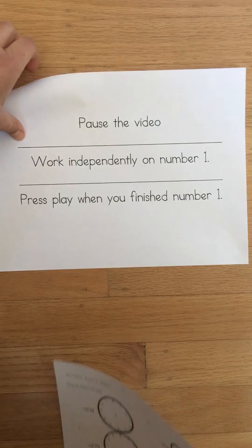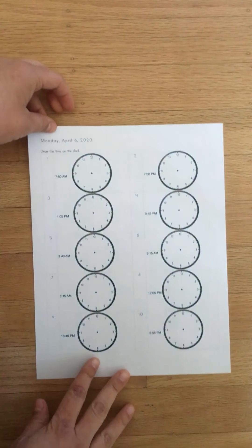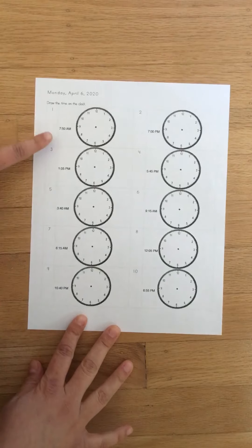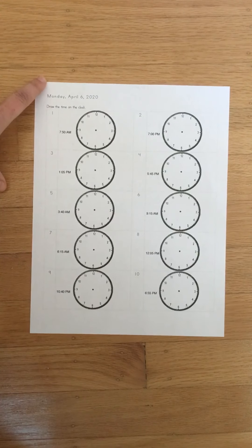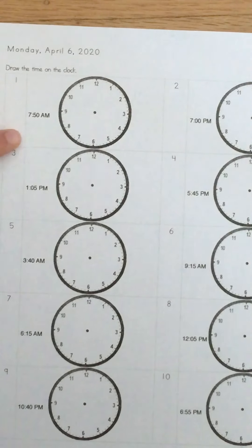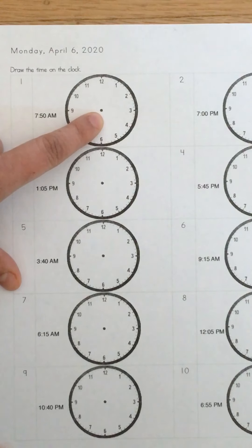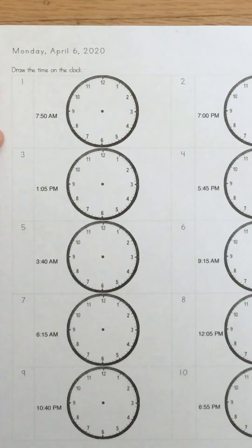If you've pressed play that means that you've finished solving problem 1. So let's go over it together. Number 1. Let's see if I can zoom in. The digital time given to us is 7:50. We have to draw the hands on our analog clock to show 7:50.